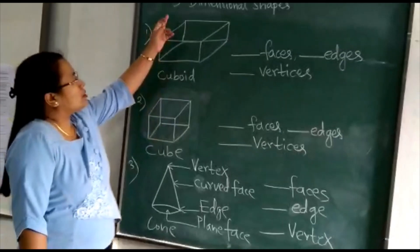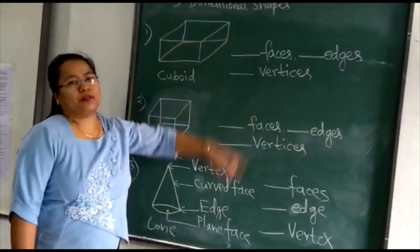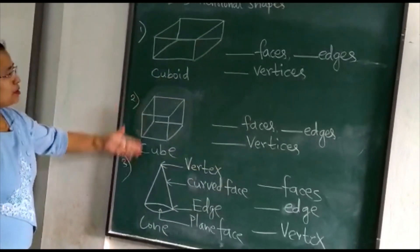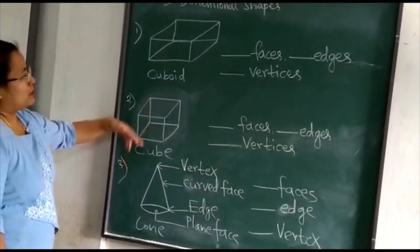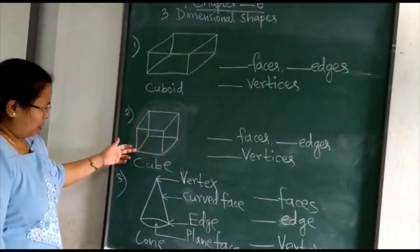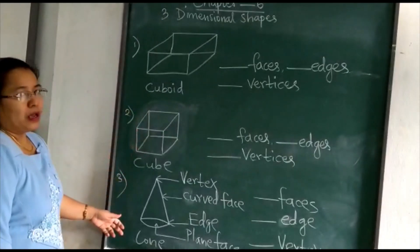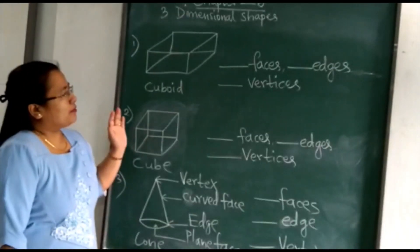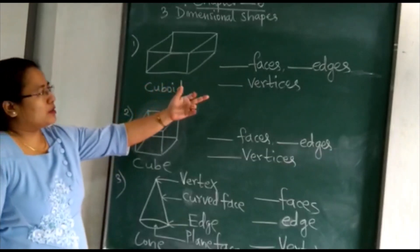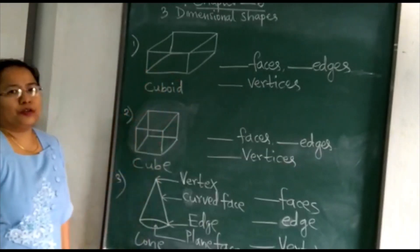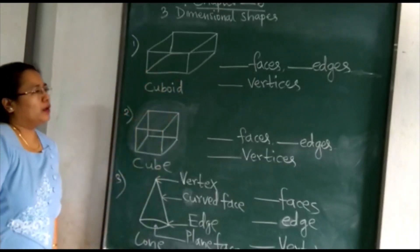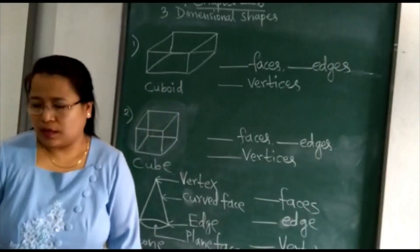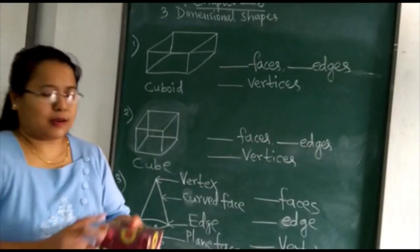Now let's come to the three-dimensional shapes. These are the three-dimensional shapes. The first one is cuboid, cube and cone. So let's find out the faces, edges and vertices of the cuboid. I will show you an object — it's a gift box for your understanding.